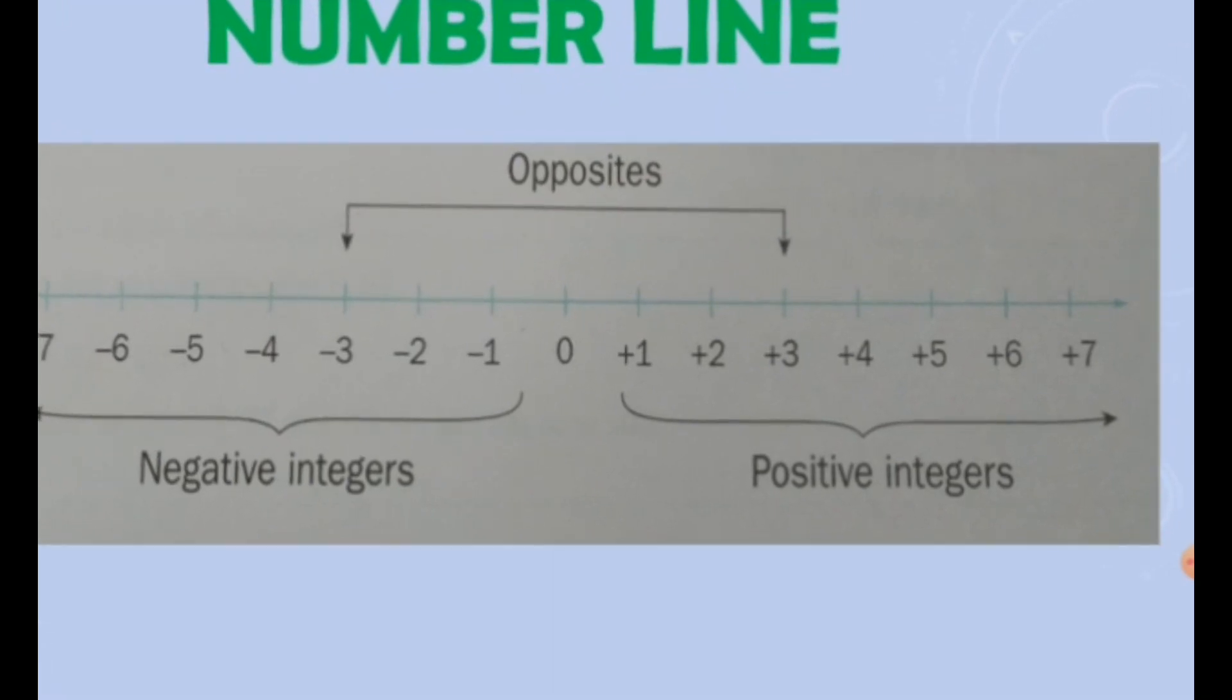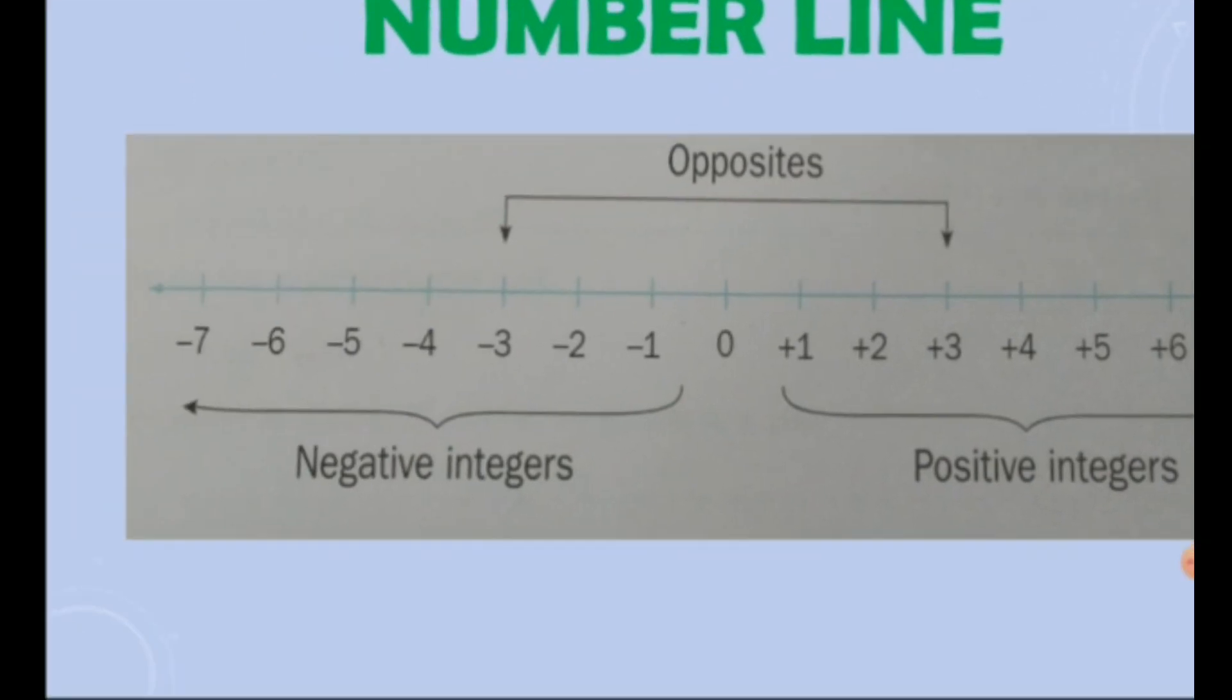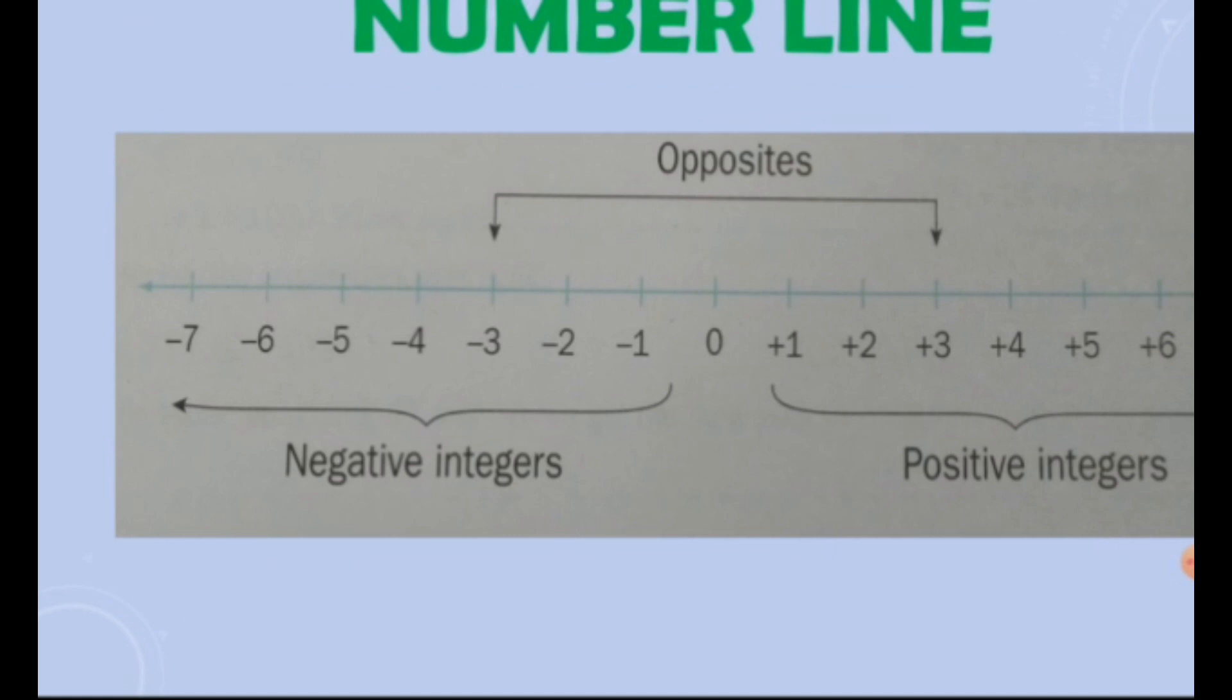So, here we can place any positive numbers at the right side of the 0 and we have to place the negative numbers at the left side of the 0.